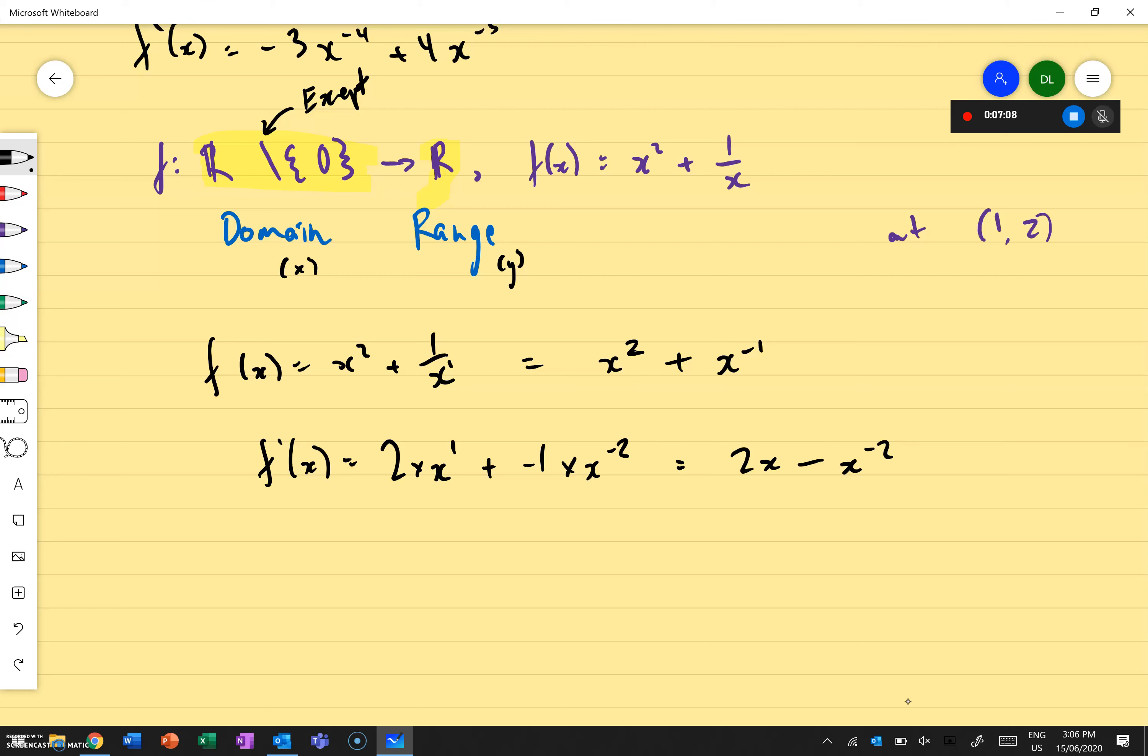Now, I've got my derivative to be this one over here, f dash x to be 2x minus x power of negative 2. I sub in the value of x. So I say, well, in this point here, I know it goes through x, which is 1. So I can say, well, f dash 1 equals to 2 bracket 1 minus 1 to the power of negative 2, which gives me 2 minus, and then 1 over 1 to the power of 2, which gives me 2 minus 1, which is 1. Have I gone through that too quickly? No? Do you have any questions about that? No? Okay.